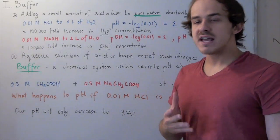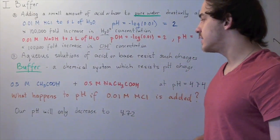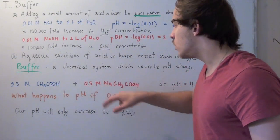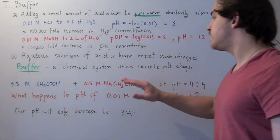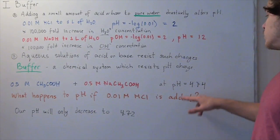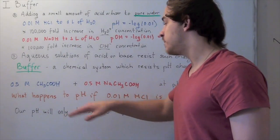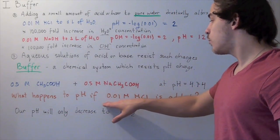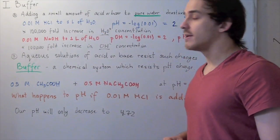For example, suppose we had a system of 0.5 molar acetic acid mixed with 0.5 molar sodium acetate in one liter of water, and this system's pH was 4.74. What happens to our pH if we add 0.01 molar of hydrochloric acid as we did in part A?